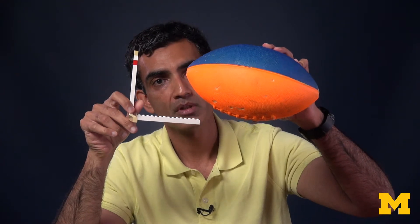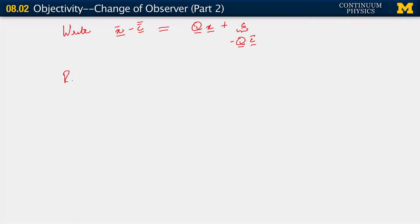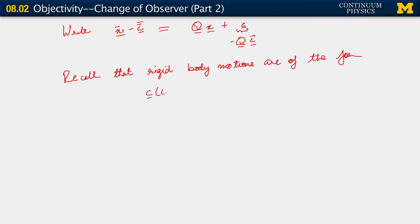That final form should look very familiar to us. Because when we talked about rigid motions involving a translation and a rotation, we had exactly this form. Recall that rigid body motions take the form R = c(t) + Q(t)x. When we studied rigid motion, this is exactly what we did, except back there instead of little x we had capital X, because we were thinking of rigid motions starting from the reference configuration.